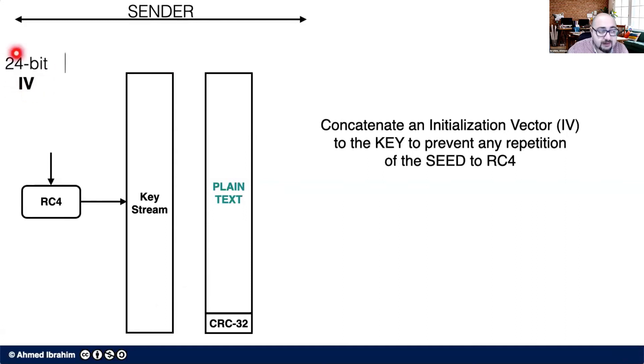So we introduce a 24-bit initialization vector and we minimize the actual key size to 40-bit and then we concatenate these two together to be 64-bit together and that becomes the seed to RC4.